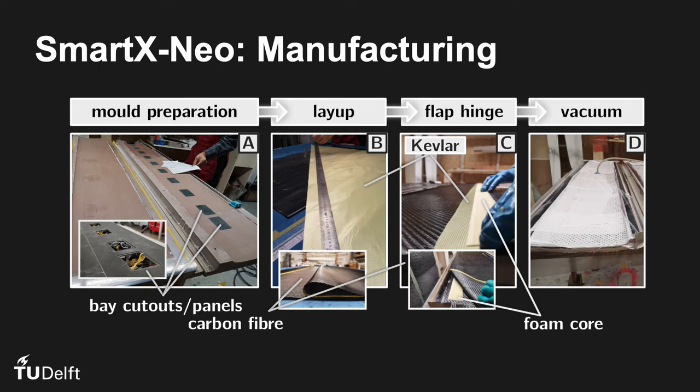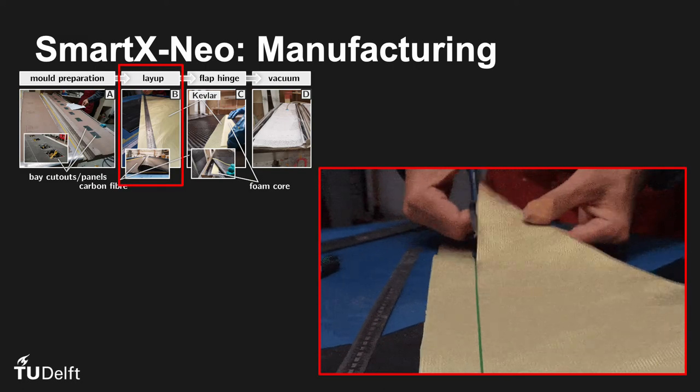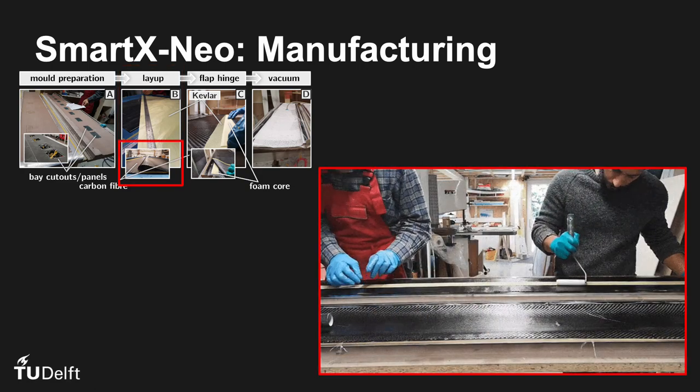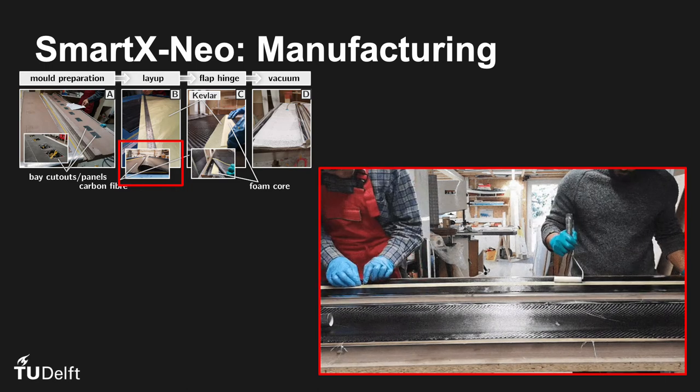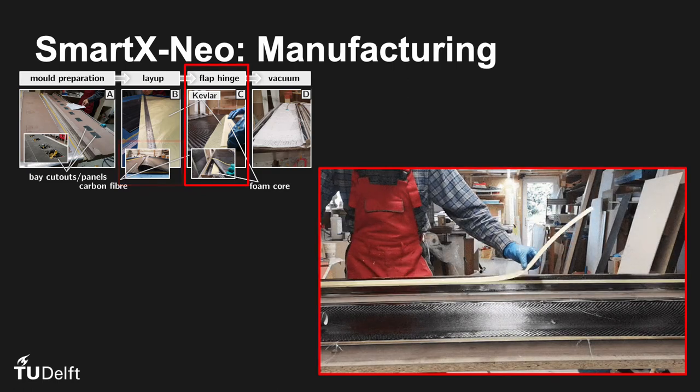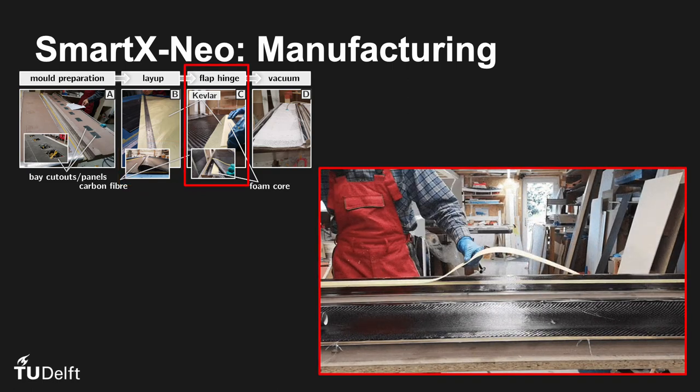Now let us go briefly over the several manufacturing steps involved. After the preparation and cutting of the composite layers, the layup is performed by hand. Here you see the cutting of the Kevlar hinge. The Kevlar is cured between the second and the third layers. The third layer is the innermost of in total three layers. The foam core was added for additional structural stability of the flap.